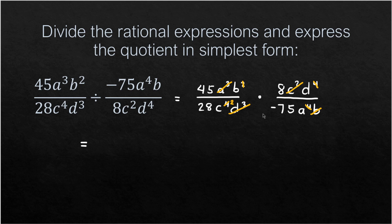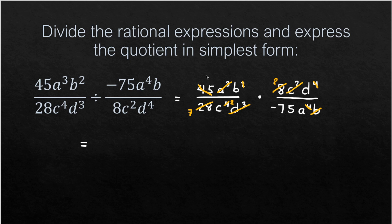For 45 and 75, the common factor is 15. So 45 divided by 15 is 3, and negative 75 divided by 15 is negative 5. There are no more common factors, so we proceed to combine what remains.